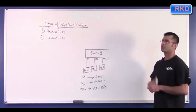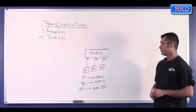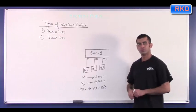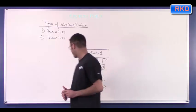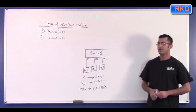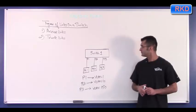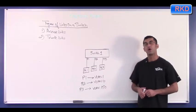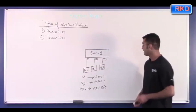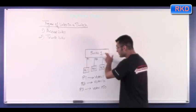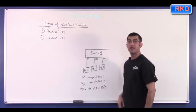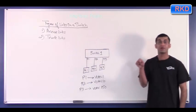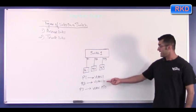If I were to tell somebody, hey, on switch one, put PC two on port two, or just put PC two in VLAN 10. So go to switch one and put PC two in VLAN 10. What I mean is that go to switch one, look up the port PC two is connected to, which is port two, and put that port on the switch in VLAN 10.